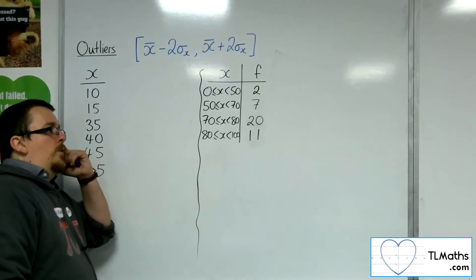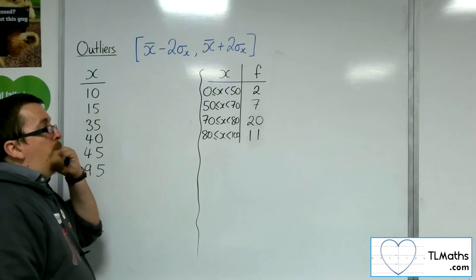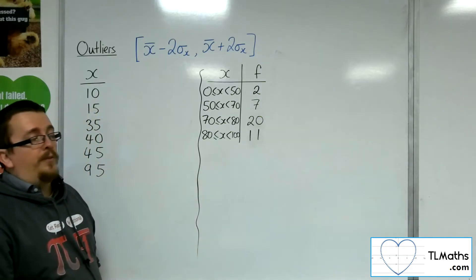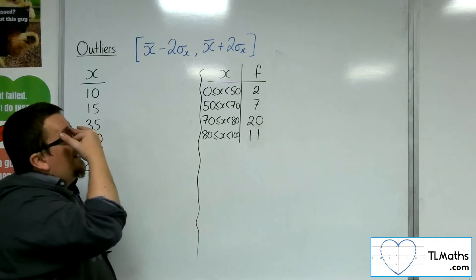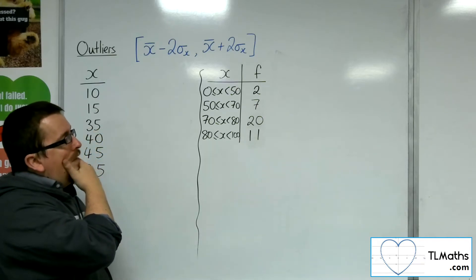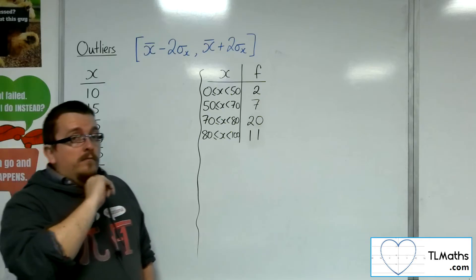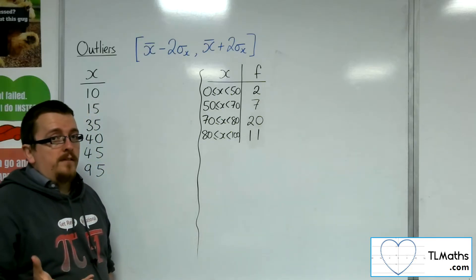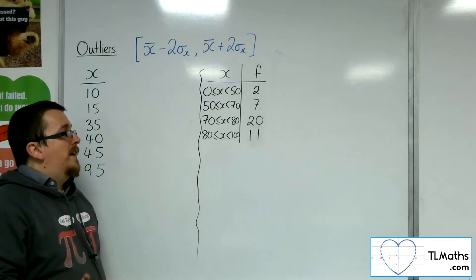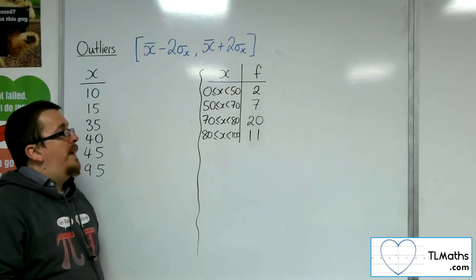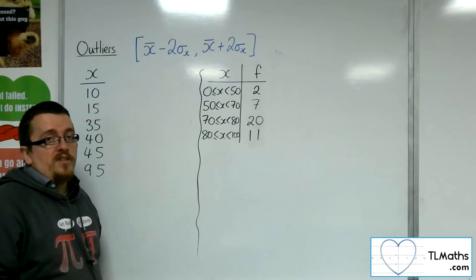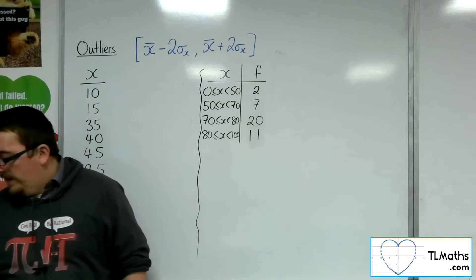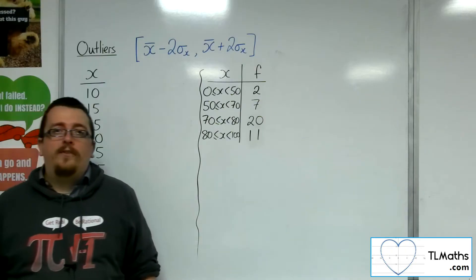I would also probably suggest that if you had been given a grouped frequency table, continuous frequency table like this, then it would be easier to find the mean and standard deviation from that, because your calculator can immediately tell you. If you had to work out the quartiles, then you would have to use a linear interpolation, and that will take more time. So it's really down to reading the question and seeing what it's asking.